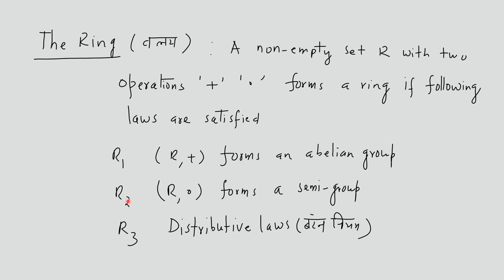R2 rule says the second operation, dot, forms a semi-group. With semi-group, we discuss the closure and associative laws. Next is R3, the distributive laws.